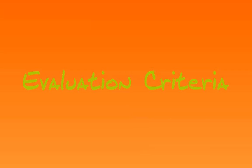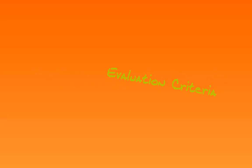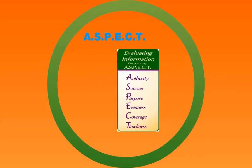So what criteria can we use? What do we look at to find out if this is going to be a good source to use or not? We're going to look at ASPECT — look at every aspect. That stands for Authority, Sources, Purpose, Evenness, Coverage, and Timeliness. We're going to look at each of these individually. When you look at a source and you're trying to decide whether to use it, you want to look at the ASPECT.